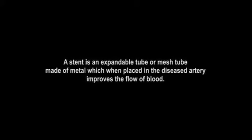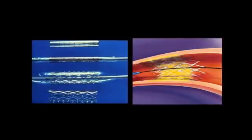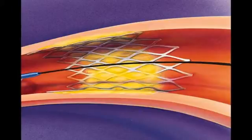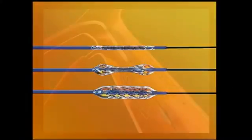What is a stent, and how is it used during treatment? A stent is an expandable mesh tube made of metal, which when placed in the diseased artery, improves the flow of blood. You can see an example of a balloon expandable stent, which is mounted on the balloon; the balloon is inflated to simultaneously perform the angioplasty and then leaves the stent behind. On the right is an example of a self-expanding stent, otherwise known as a nitinol stent, made out of a special nickel-titanium metal alloy, which has a thermal memory and will expand to a specified diameter within the blood vessel.